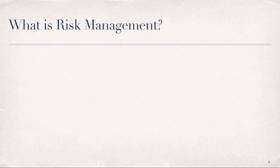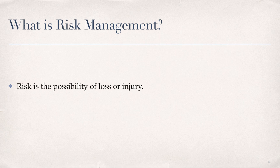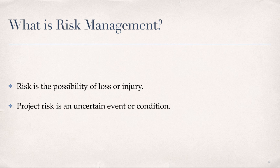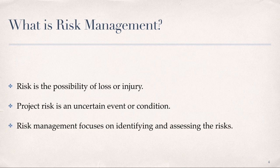So let's provide a definition of risk management. Merriam-Webster defines risk as a form of uncertainty. Project risk is an uncertain event or condition that, if it occurs, has an effect on at least one project objective. And risk management focuses on identifying and assessing the risk to the project and managing those risks in order to minimize the impact on the project. To summarize, risk management is not about eliminating risks, but rather it's about identifying, assessing, and effectively managing risk.